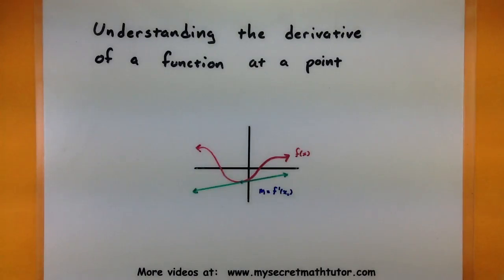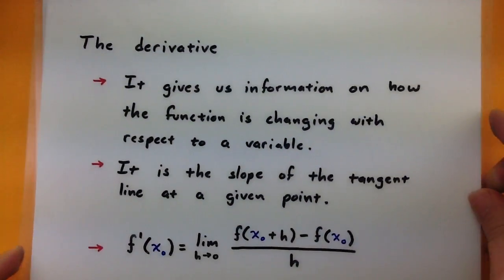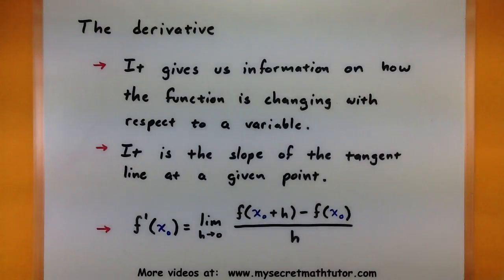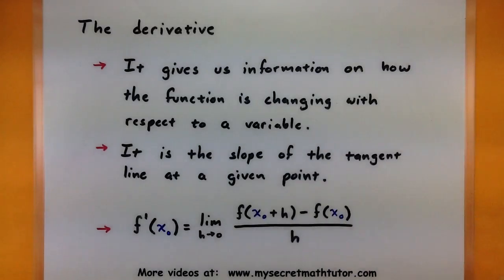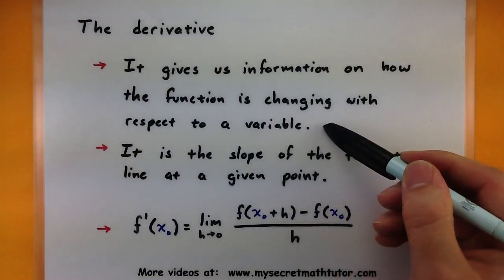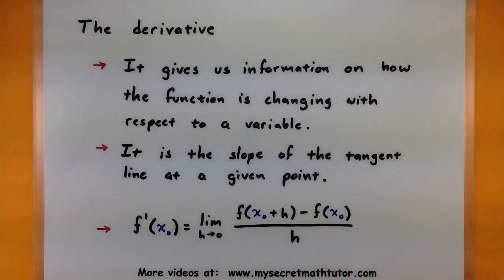So let's first go over some different ways that you can think of what a derivative is. The big idea behind a derivative is that it gives us information on how a function is changing with respect to a variable. Now usually when you first learn a derivative, this will be with respect to x usually. And so you want to know where is your function increasing, where is it decreasing, maybe where is it staying the same.